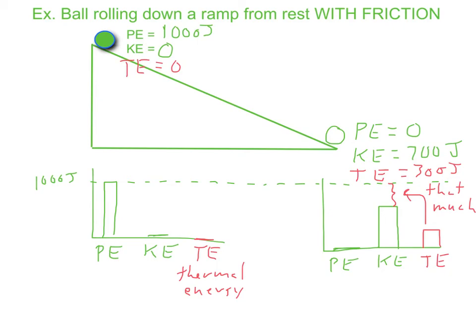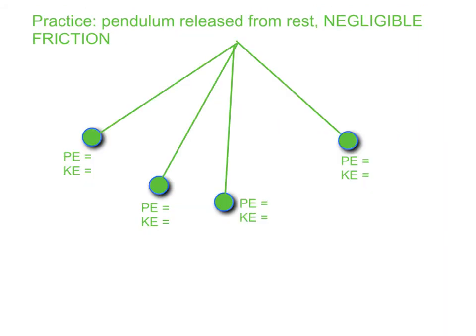So for practice, I'd like you to do this example. It's a pendulum being released from rest. Let me give you some numbers. You should draw this in your notebook in your concept catalog. Let's say that the potential energy it starts with is 200 joules.